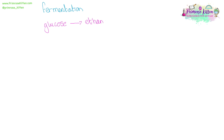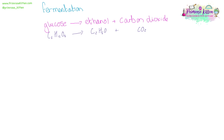In fermentation, we have glucose being converted into ethanol and carbon dioxide. Glucose is C6H12O6, converting to ethanol C2H6O plus carbon dioxide CO2. And to balance that, we need two ethanols and two carbon dioxides.